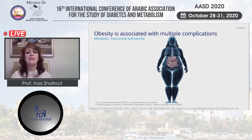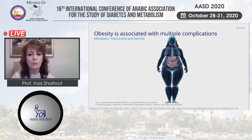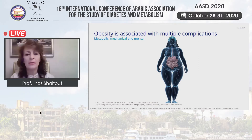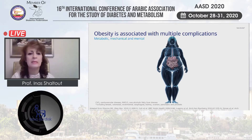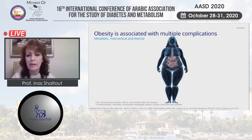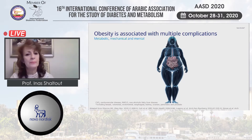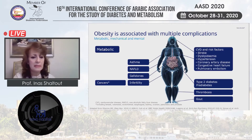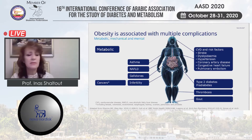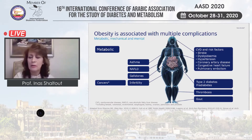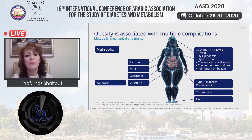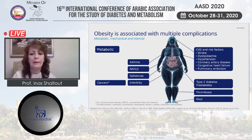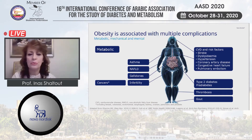Obesity is associated with up to 200 known complications. These are either metabolic, mechanical, or mental. The metabolic complications include certain cancers with increased incidence in obesity, such as uterine cancer, ovarian cancer, renal cell carcinoma, GIT carcinoma, and breast carcinoma — many types of carcinoma are linked to obesity.